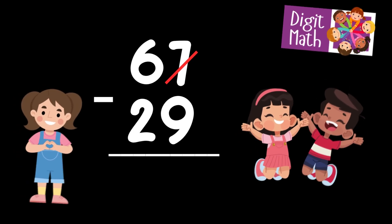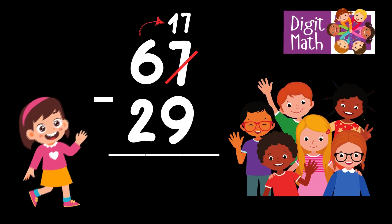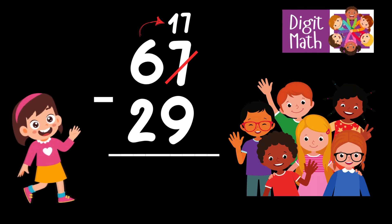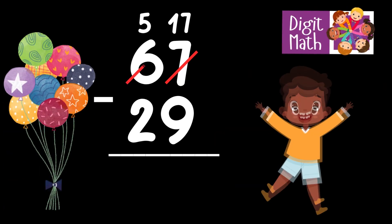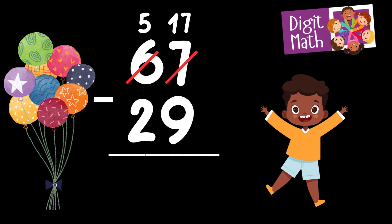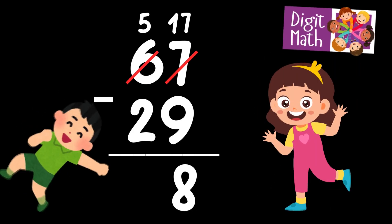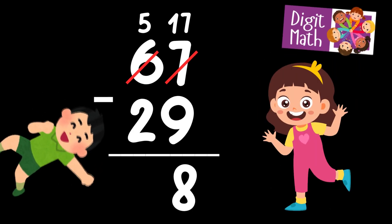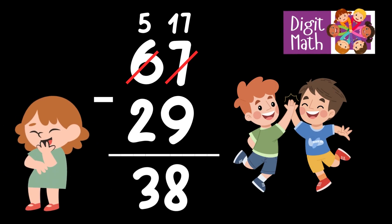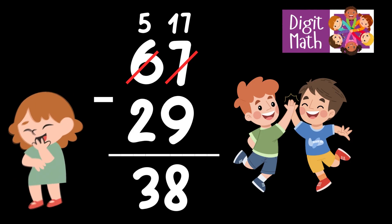In the Units column, we have 7 minus 9. Since it's not possible to subtract 9 from 7, we need to borrow from the Tens column. In the Tens column, we have 6. We take 1 from the Tens, leaving 5 in the Tens column and turning the Units column into 17. Now we have 17 in the Units column. Subtract 9 from 17, which equals 8. In the Tens column, we now have 5. Subtract 2 from 5, which equals 3. So the final result is 67 minus 29 equals 38.